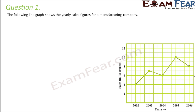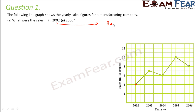What were the sales in 2002 and 2006? On the x-axis, 2002 corresponds to a sales value of 4 crores. So the sales in 2002 were rupees 4 crores. For 2006, the corresponding value is 8, so in 2006 the sales were rupees 8 crores.